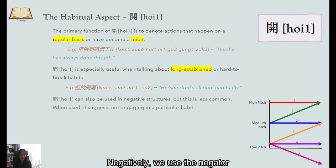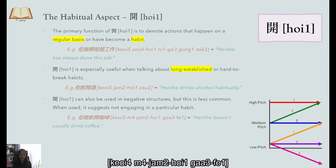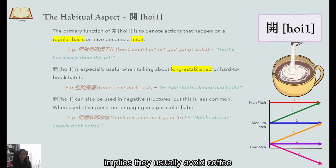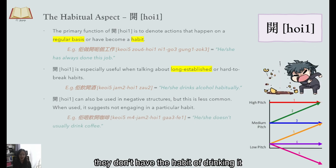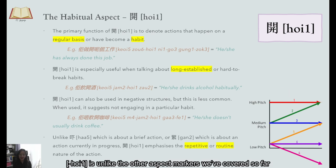Negatively we use negator 唔 and this is usually placed in front of the verb to indicate that someone doesn't have a habit of doing something For example 佢唔飲開咖啡 implies they usually avoid coffee and they don't have the habit of drinking it Now 開 is unlike the other aspect markers we've covered so far 開 focuses on the habitual or the routine nature of an action rather than its occurrence or its continuity